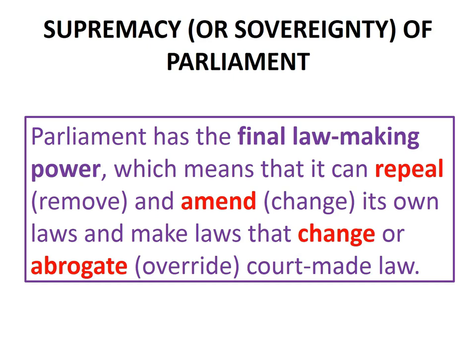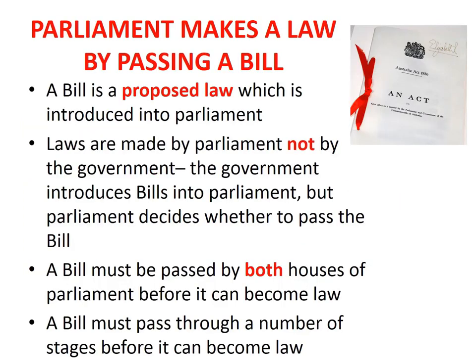In your vocabulary sheets, go to the end where there are blank spaces and write in the term 'supremacy or sovereignty of Parliament,' then write a definition next to it. On this slide, I have set out some important points you must keep in mind. First, a proposed law which is introduced into Parliament is known as a bill. Look down the left-hand side of your vocabulary sheets, find the term bill, and write this definition in there. It's only if Parliament passes that bill that it then becomes an act of Parliament.